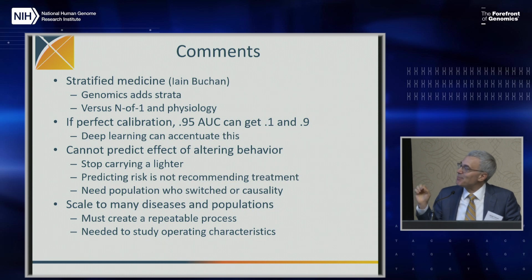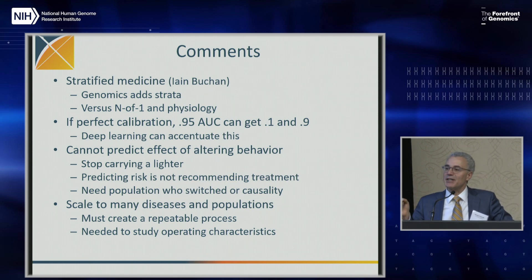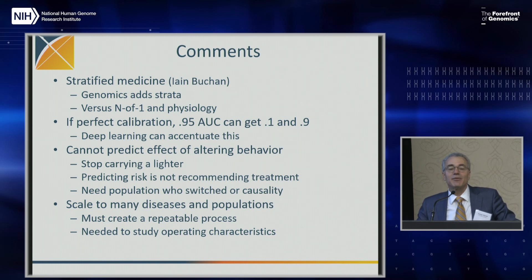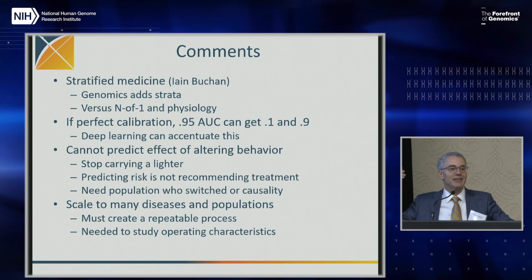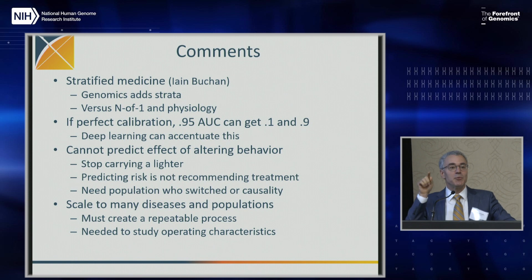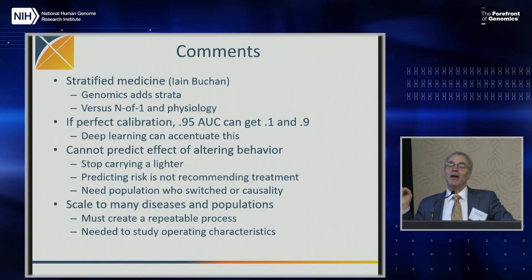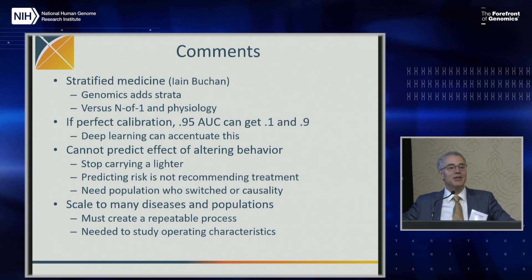The other important point is you can't predict the effect of altering behavior — we're doing risk prediction, not causality, in most of the models we're talking about today. The example: if you build a prediction model on carrying a cigarette lighter for lung cancer, you'll find it's highly predictive. But if I stop carrying a cigarette lighter without stopping smoking, I'll still get lung cancer. You can't move yourself from one risk group to another. Your risk group is only pre-determined. The only way to do this is if you have a population that has made the switch from high to low risk, or you need a deep treatment of causality.